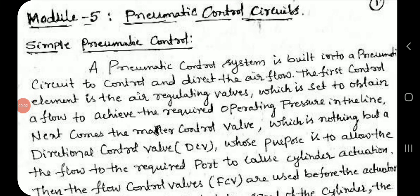Module 5: Pneumatic Control Circuits. A pneumatic control system is built into a pneumatic circuit to control and direct the airflow. The first control element is the air regulating valve, which is set to obtain the required operating pressure in the line. Next comes the master control valve, which is a directional control valve whose purpose is to allow flow to the required port to cause cylinder activation.